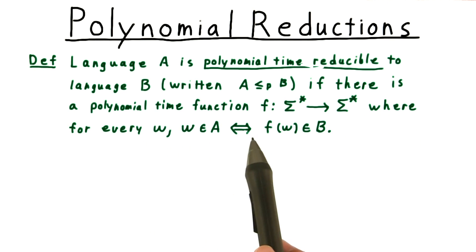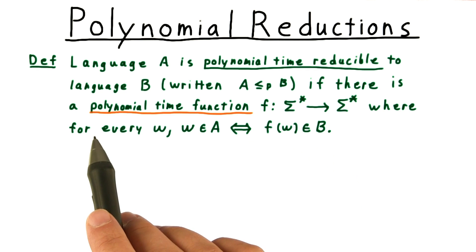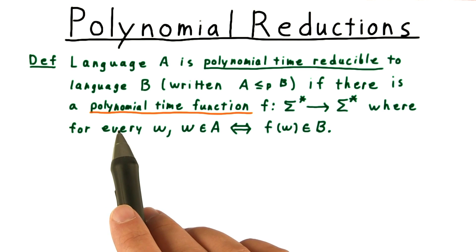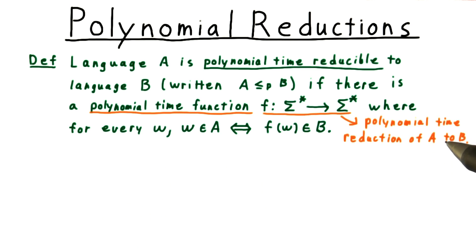w is in A if and only if f(w) is in the language B. The key difference from before is that we have now required that the function be computable in polynomial time, not just that it be computable. We will also say that f is a polynomial time reduction of A to B, or sometimes from A to B.